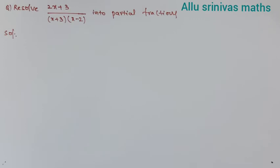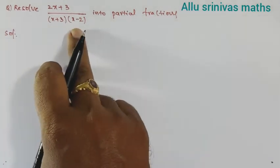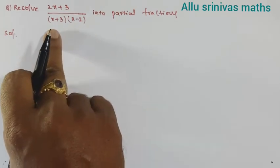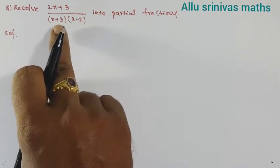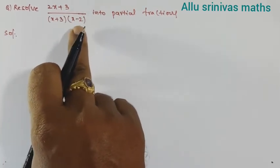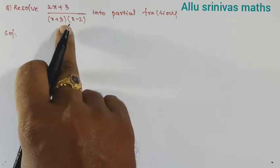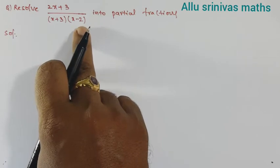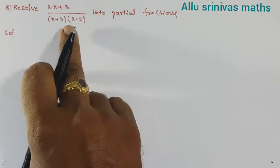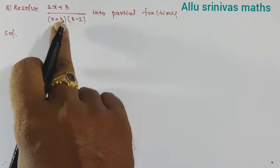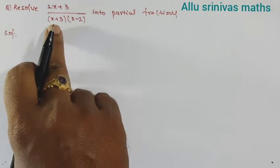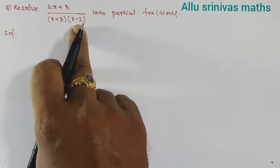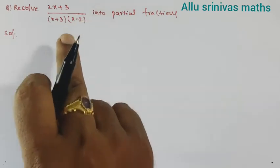Let us observe the given fraction. The denominator has how many factors — there are two factors. What kind of factors? Linear factors. We know that linear factors are irreducible factors, and x plus 3 and x minus 2 are also non-repeated linear factors.